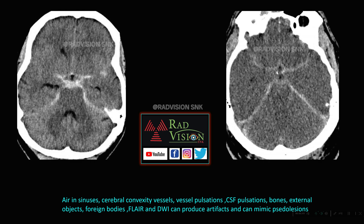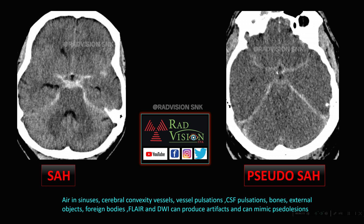Next case: this shows true subdural hematoma — a hyperdense collection in the basal cisterns along the Sylvian fissures — versus pseudo subdural hematoma, which is diffuse cerebral edema with relative hyperdensities of the falx, tentorium, and along the Sylvian fissures. Air in the sinuses, cerebral convexity vessels, vessel pulsations, CSF pulsations, bones, external objects, foreign bodies, FLAIR, and diffusion-weighted imaging can all produce artifacts and mimic pseudo lesions.